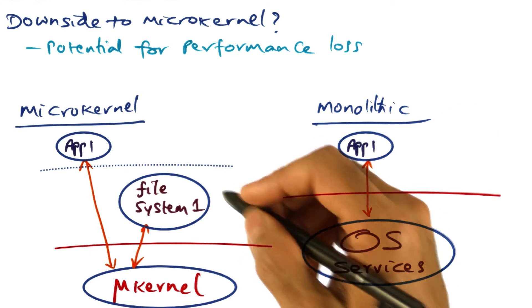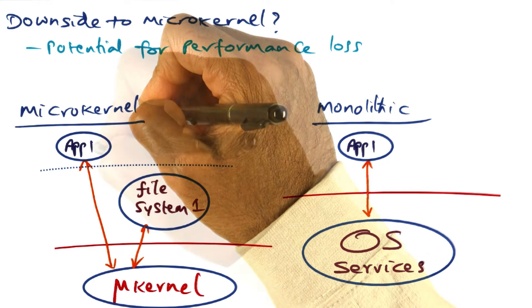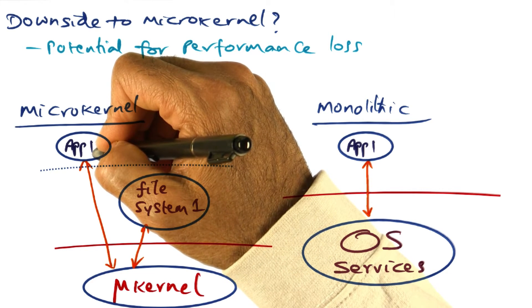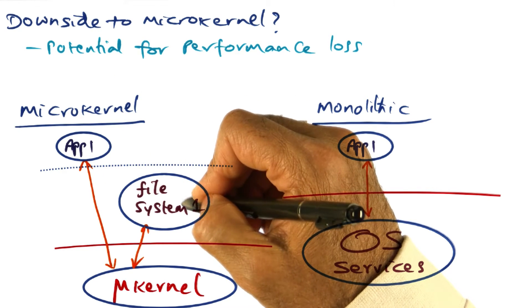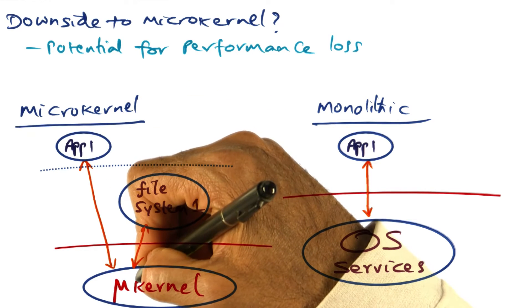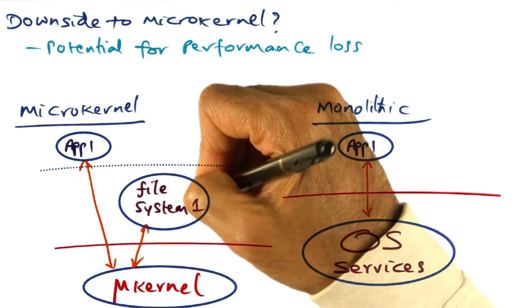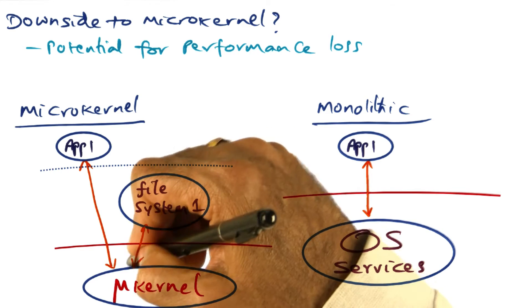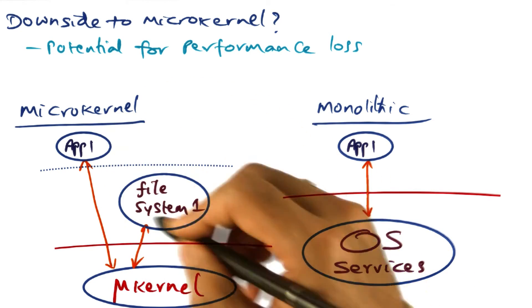On the other hand, if you look at a microkernel-based structure, the application has to make an IPC call in order to contact the service — in this case a file system service — which means that the application has to go through the microkernel, making the IPC call, going up to the file system. The file system does the work and makes another IPC call in order to deliver the results of that system service back up to the application.